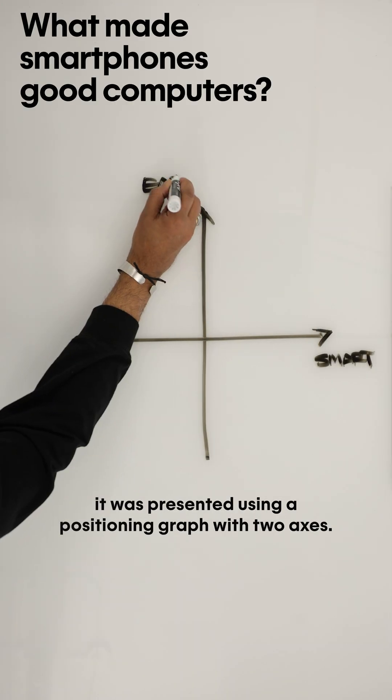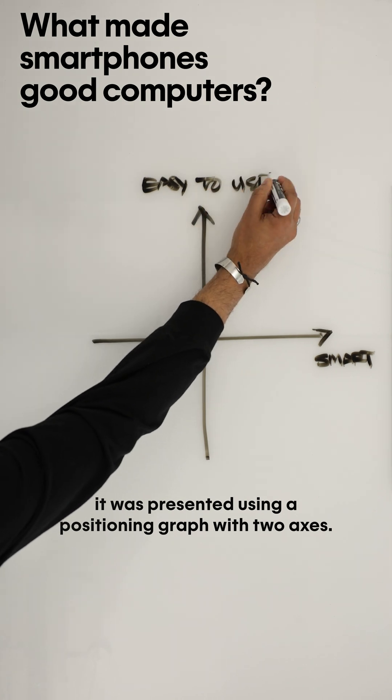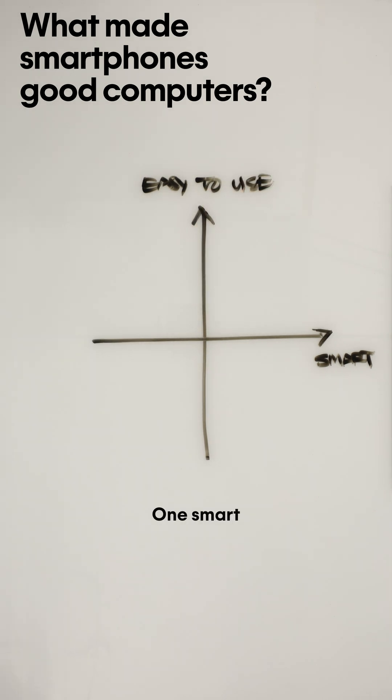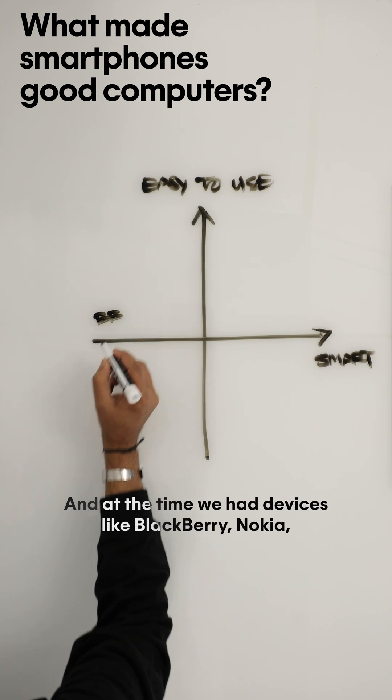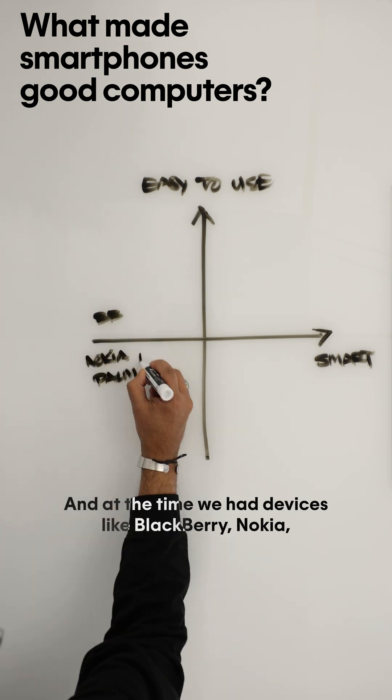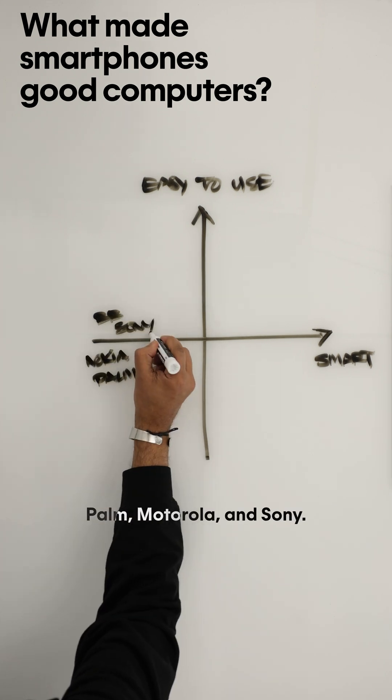When the iPhone was introduced, it was presented using a positioning graph with two axes, one smart and the other easy to use. And at the time we had devices like BlackBerry, Nokia, Palm, Motorola, and Sony.